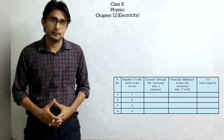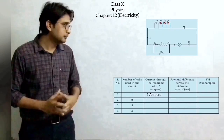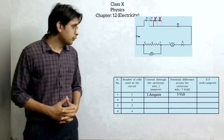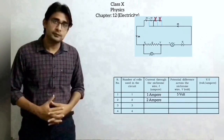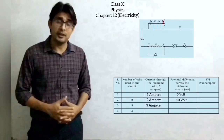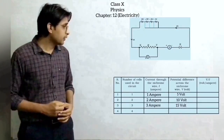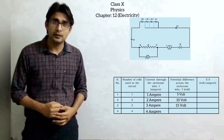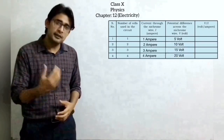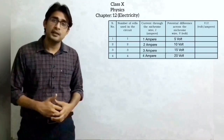After this we fill the table. With one cell: current is one ampere, potential difference is five volts. With two cells: current is two amperes, potential difference is ten volts. With three cells: current is three amperes, potential difference is fifteen volts. With four cells: current is four amperes, potential difference is twenty volts. As you can see, when we double the potential difference the current also doubles; when we triple the potential difference the current also triples.